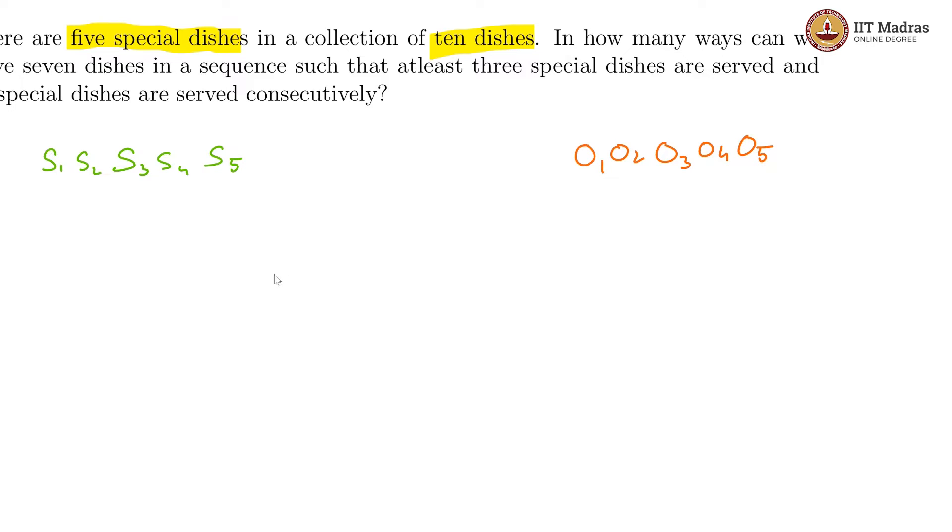These are the dishes and now we have to serve 7 dishes. Out of these 10, we have to pick 7 and serve them in a sequence. So we are looking at permutations, not combinations. They are saying at least 3 special dishes should be served. Of the 7, you can have 3 special dishes or 4 special dishes or all 5 special dishes, and all special dishes are served consecutively. There is no serving of an ordinary dish in the middle of the special dishes sequence.